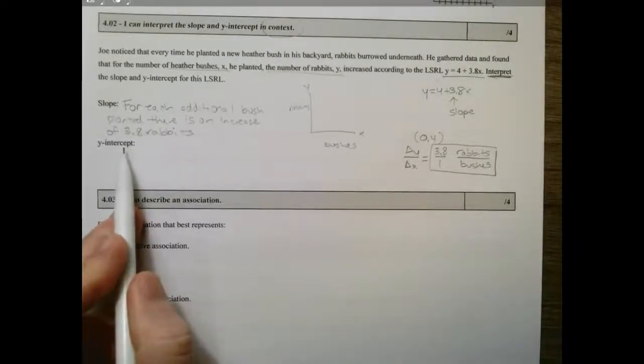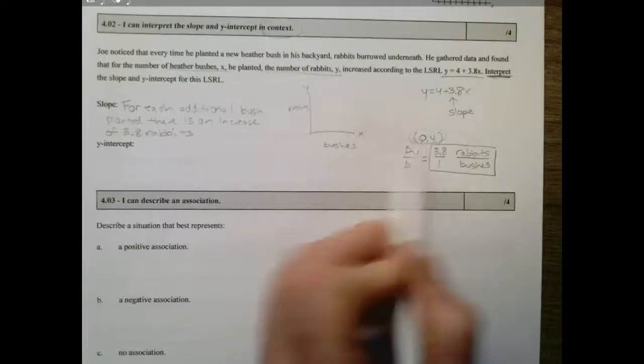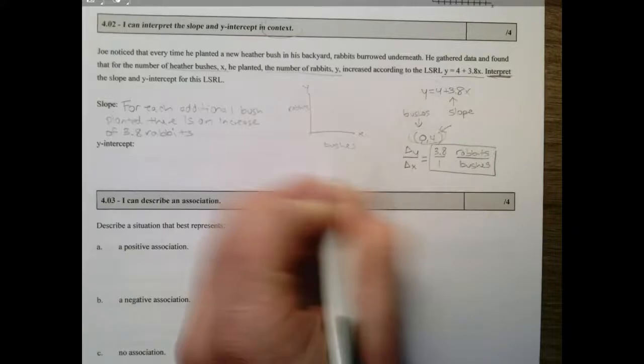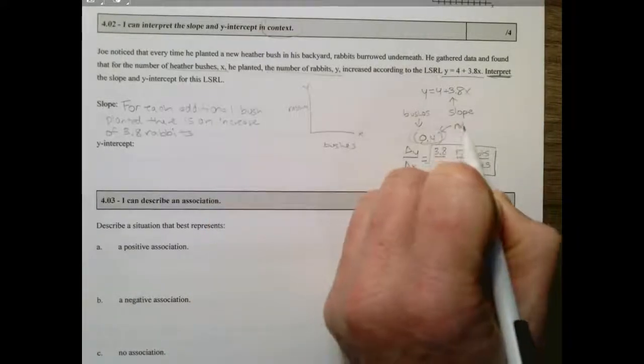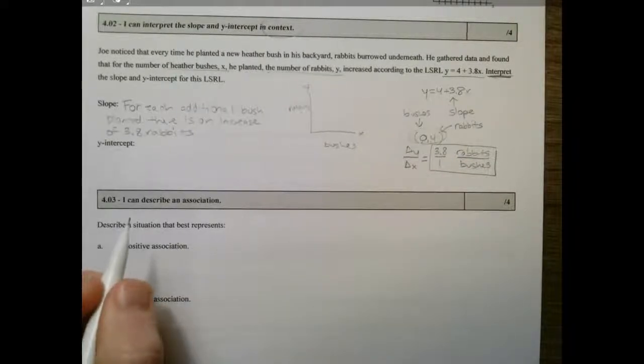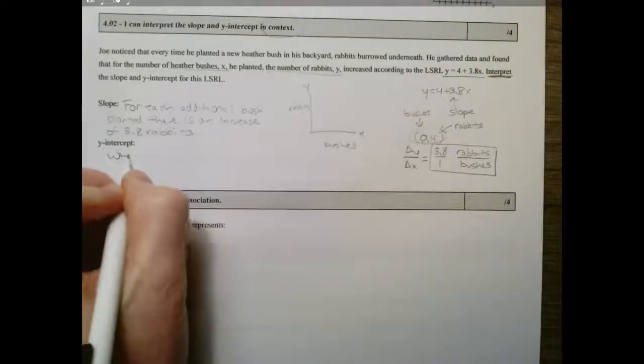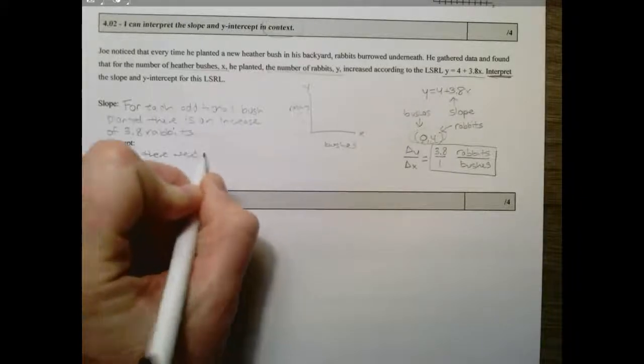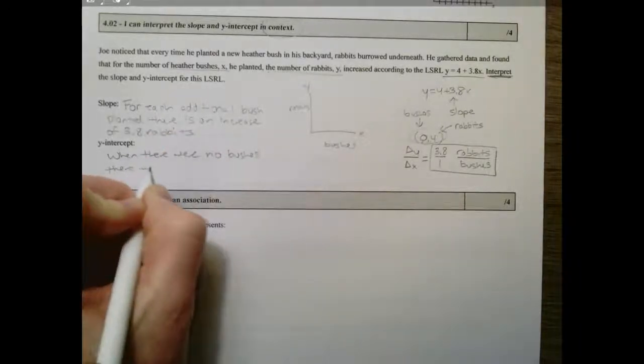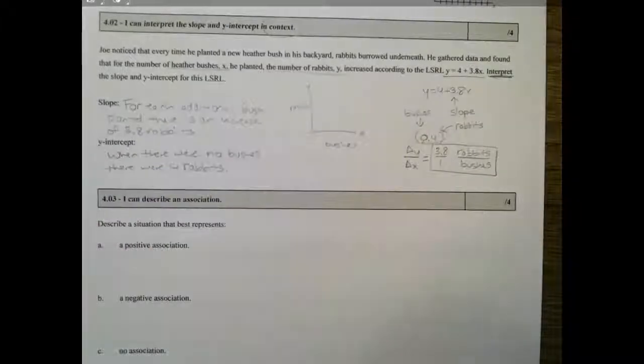The y-intercept in context: you can't just say 4 or (0, 4). What does that mean? Well, 0 is bushes and 4 is rabbits. So what does the y-intercept mean? When there were no bushes, there were four rabbits. That's what it means to interpret.